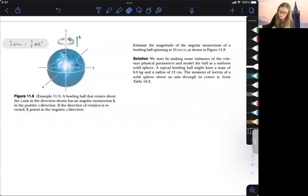Okay, so this one is just a short problem on estimating the angular momentum for a system. This one is very straightforward. We just have a bowling ball and we want to guess what the angular momentum is for this bowling ball.